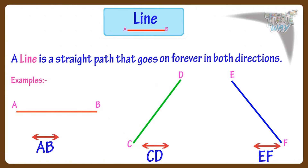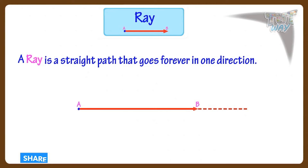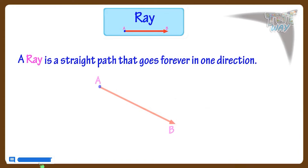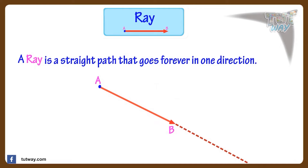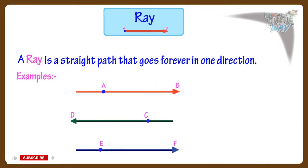Now let's see what is a ray. A ray is a straight path that goes forever in one direction. For example, ray AB — there is an end point on one side, and on the other side there is an arrow showing it goes forever in that direction. The symbol on top of the name shows that this is a ray starting from A and going forever in direction B. Here are more examples of rays and how they are named.